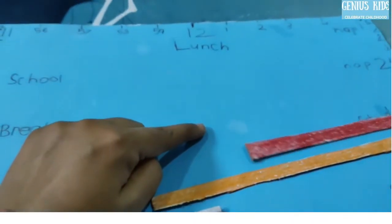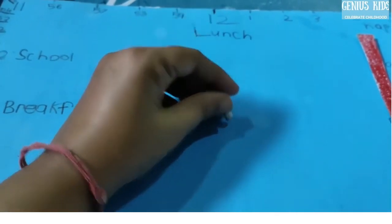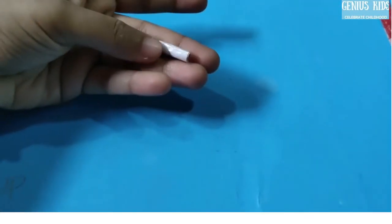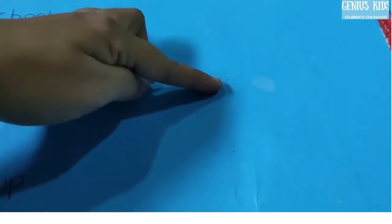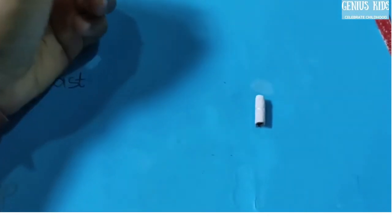I have marked the midpoint now and then I will make a hole here and insert this. This I have made from cardboard only. I have rolled it and put a tape, and here I will insert this and the hour hand and the minute hand will be on this.